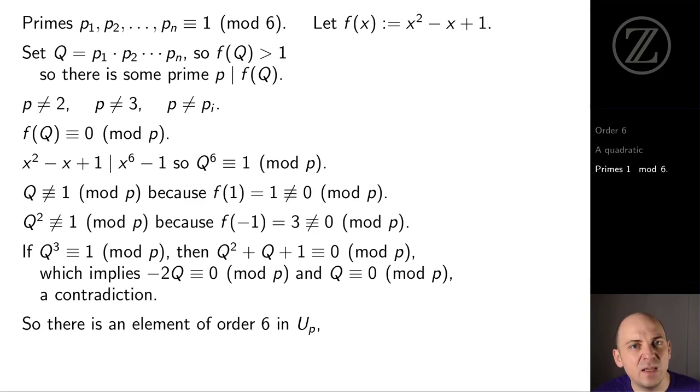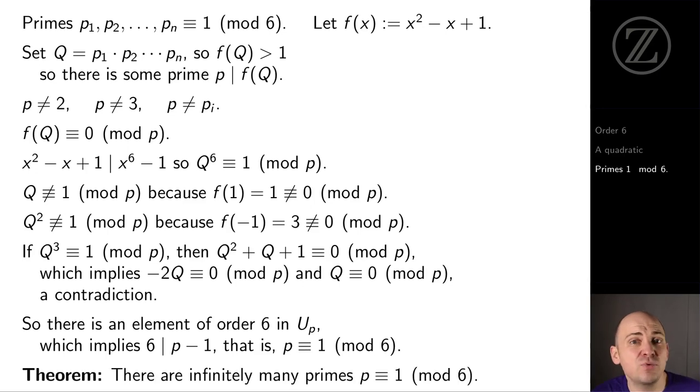So we have an element of Up of order 6, and this is enough to show that 6 divides p minus 1. That is, we've shown that p is 1 mod 6. And since p wasn't a prime that we had on our list, we found a new prime which is 1 mod 6. And consequently, there are infinitely many primes of the form 1 mod 6.